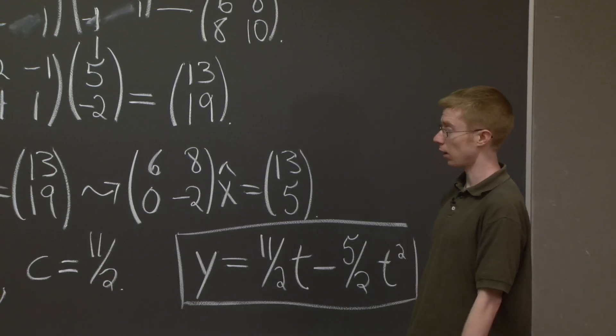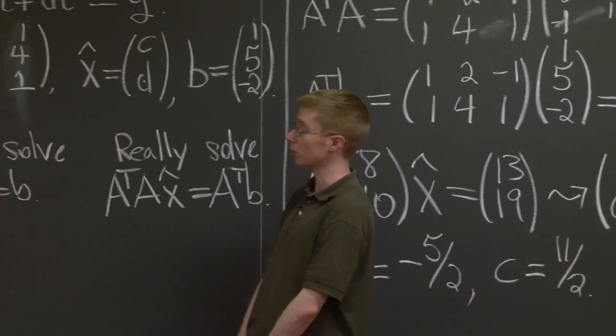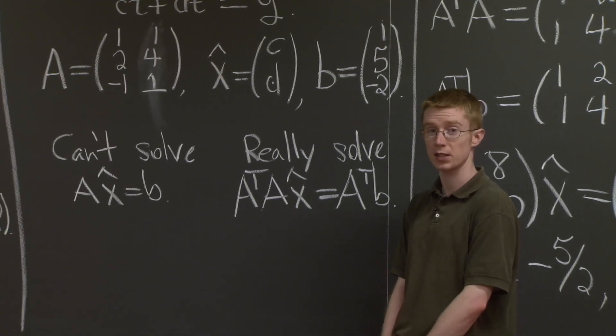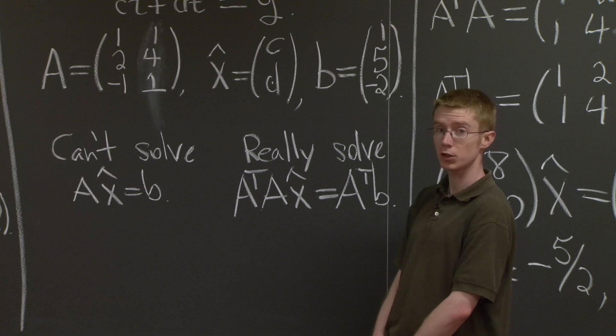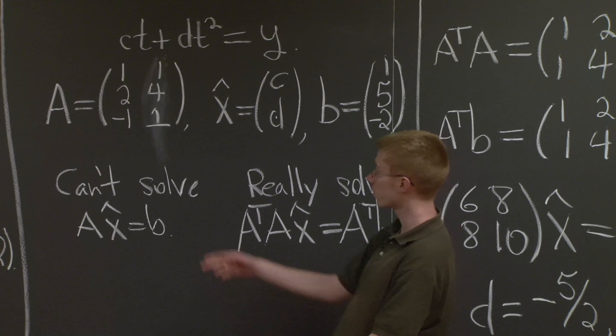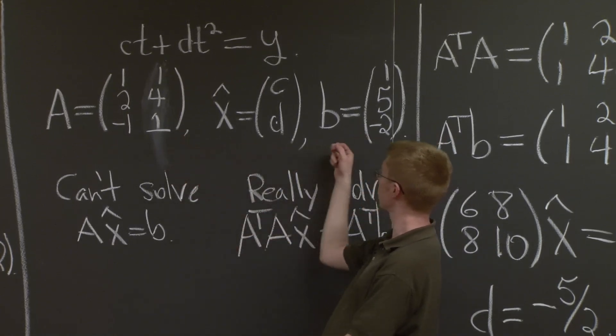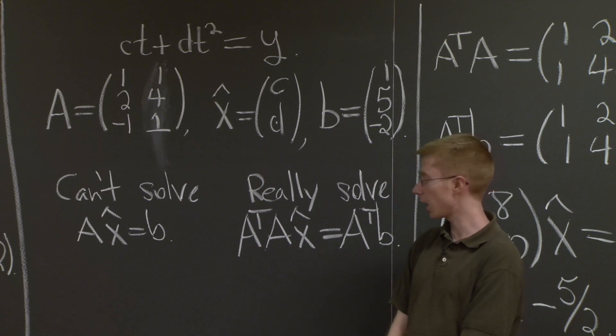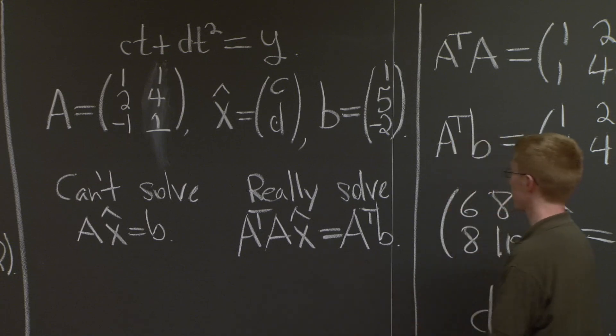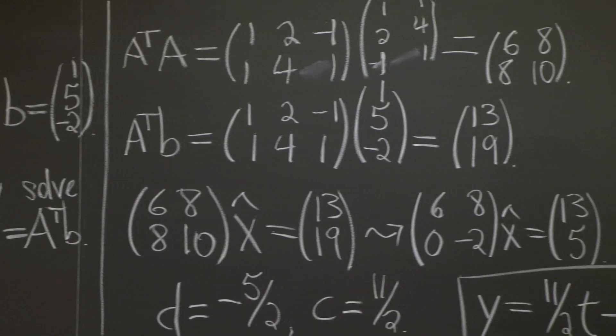First, let me go back and review what the key steps were. Whenever you're faced with such a best fit equation, first you want to see what the general form of the equation is. Next, you want to write it in terms of matrices. Write down your matrix A and your vector b. And lastly, you set up your projection equation. And then all you have to do is just a computation. Good.